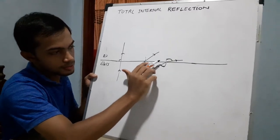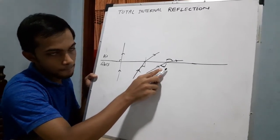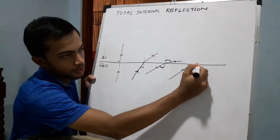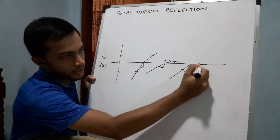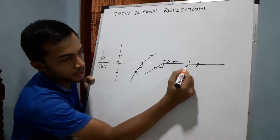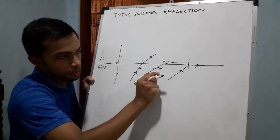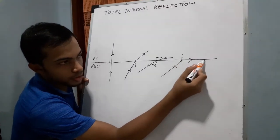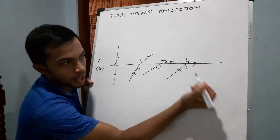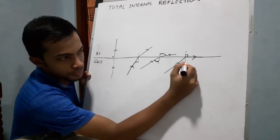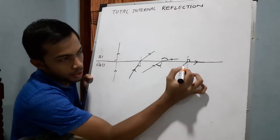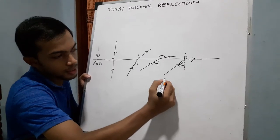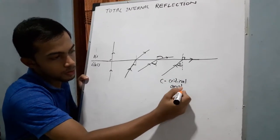At a certain moment, when you increase this angle, the incident ray will move through this interface. At one moment, you can see the refracted ray will move along this interface, making an angle of refraction of 90 degrees. So this is a special situation. At this special situation, the angle of incidence is known as the critical angle, denoted as C.